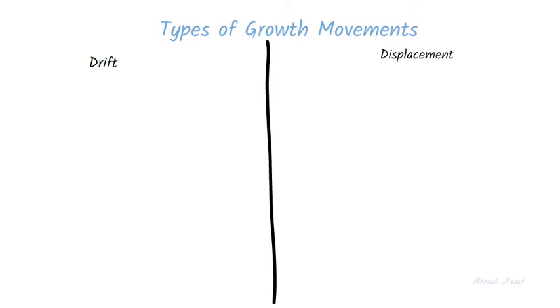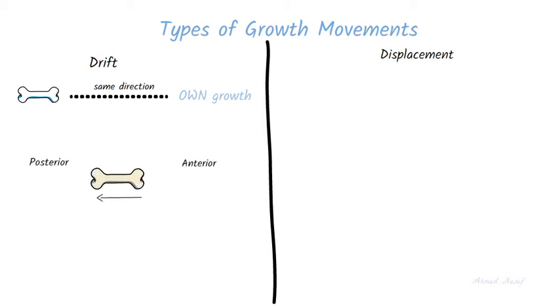Let's start with drift. Drift is the movement of the bone in the same direction of its own growth. For example, if the bone is growing in a posterior direction, this means that there is bone deposition on the posterior side and resorption on the anterior side.